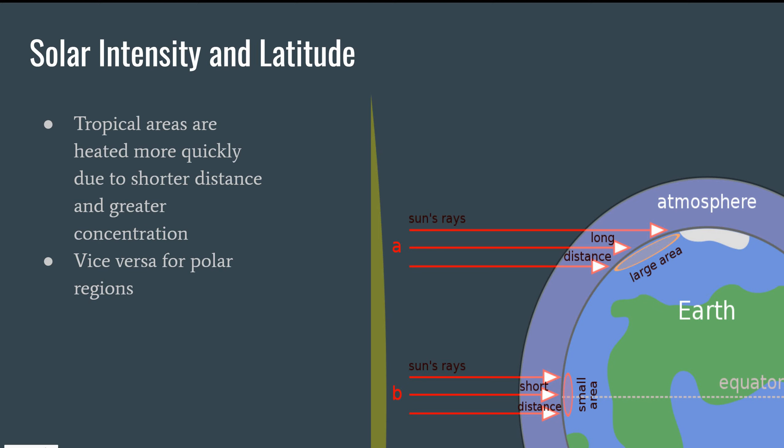So you can see here the tropical areas, areas that are near the equator and below or above the tropics, these areas are heated more quickly due to the sun rays having to travel a shorter distance to reach a particular point of land. And you can see here that not only is it a shorter distance, but also the amount of sun rays are concentrated on a much smaller area compared to the polar regions.